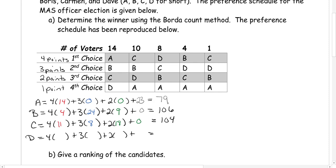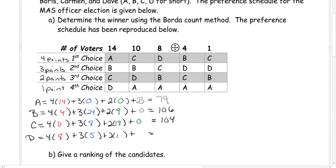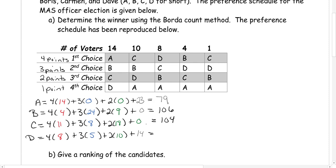Candidate D has 8 first place votes, 5 second place votes, 10 third place votes, and 14 last place votes. So we take 4 times 8, plus 3 times 5, plus 2 times 10, plus 14, and this gives a total of 81.